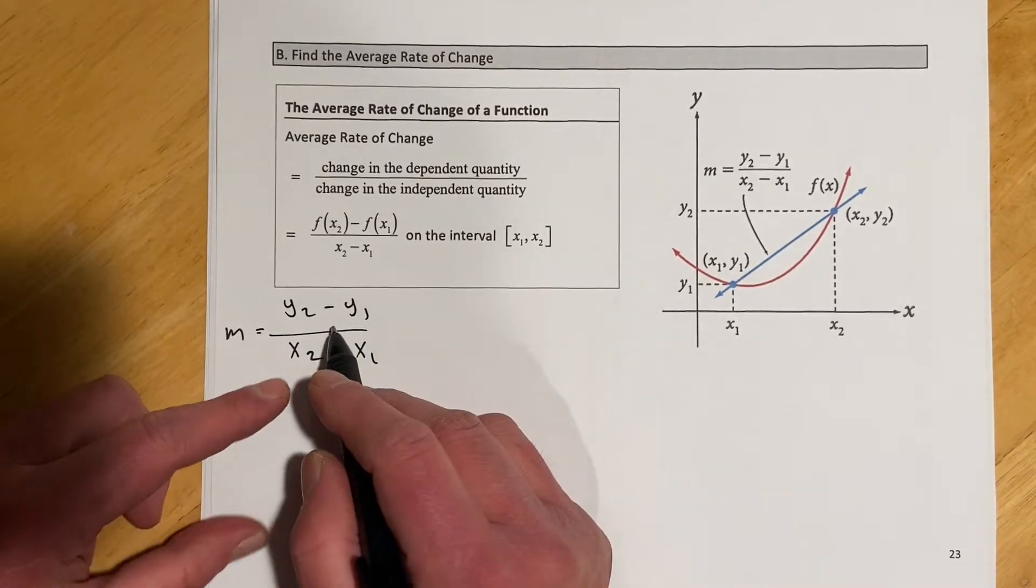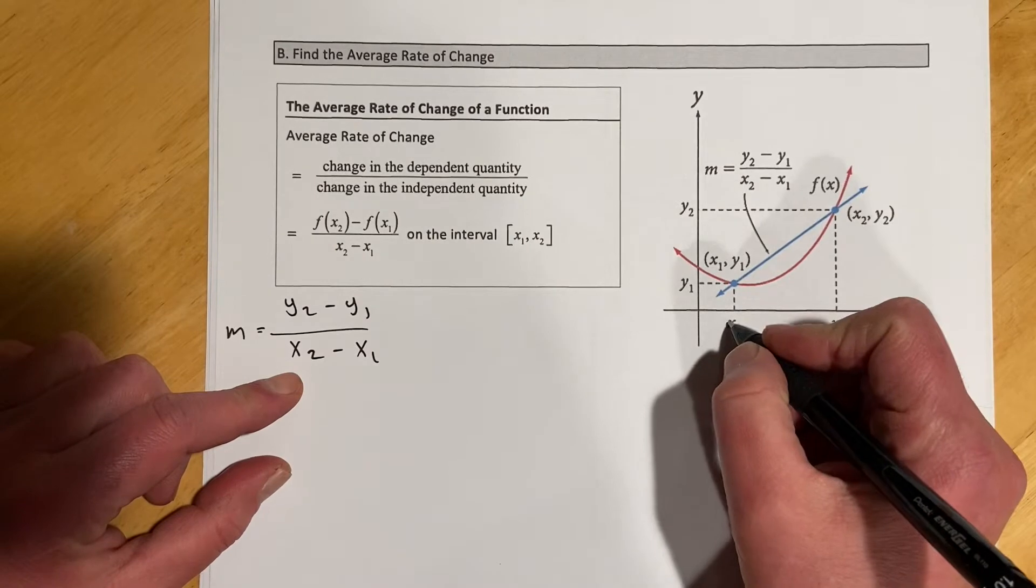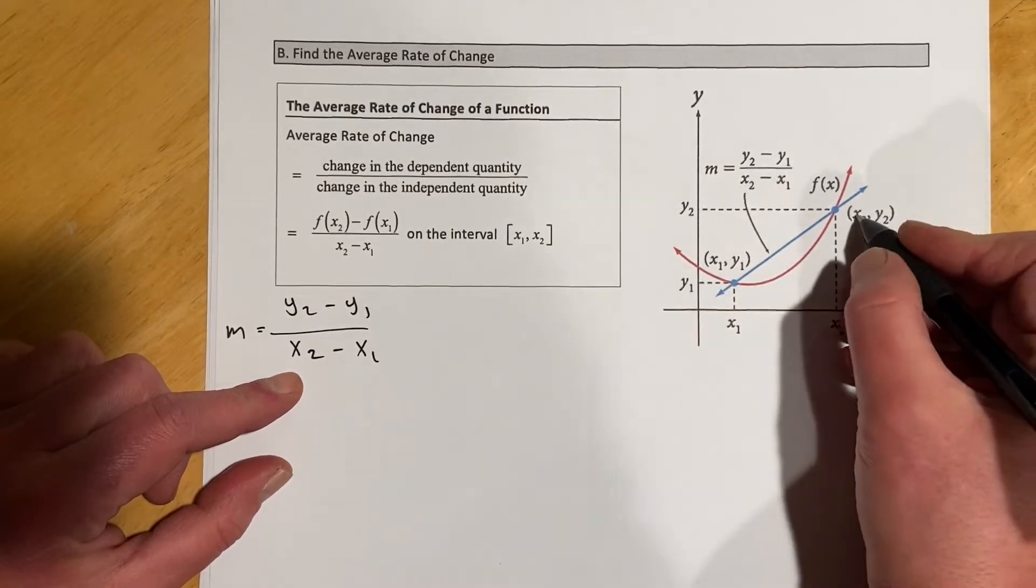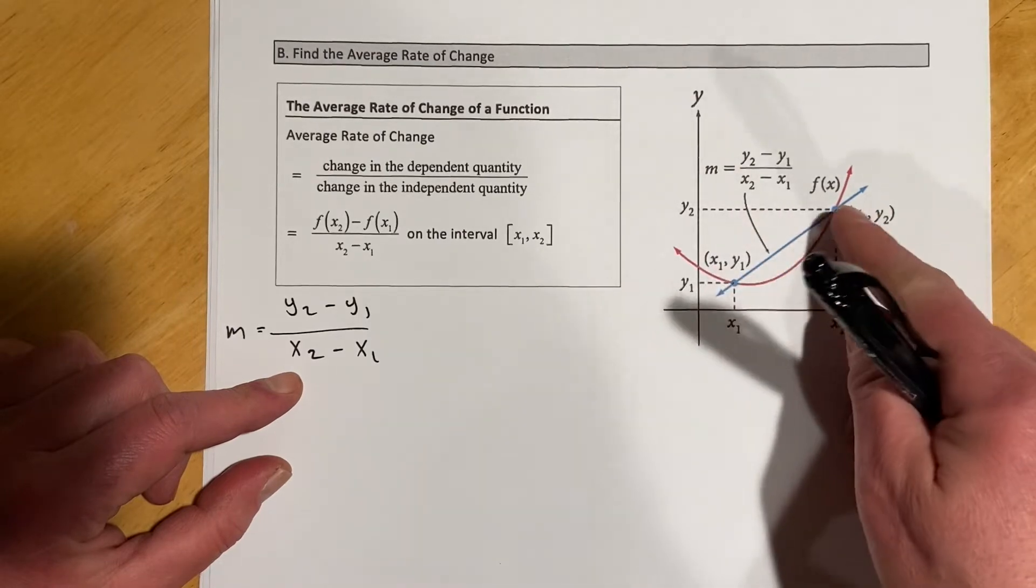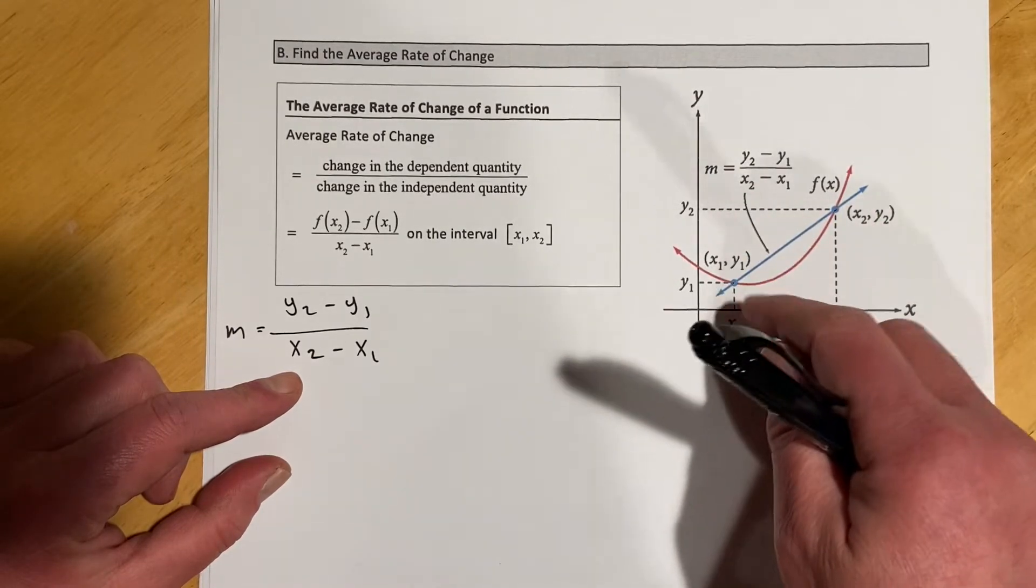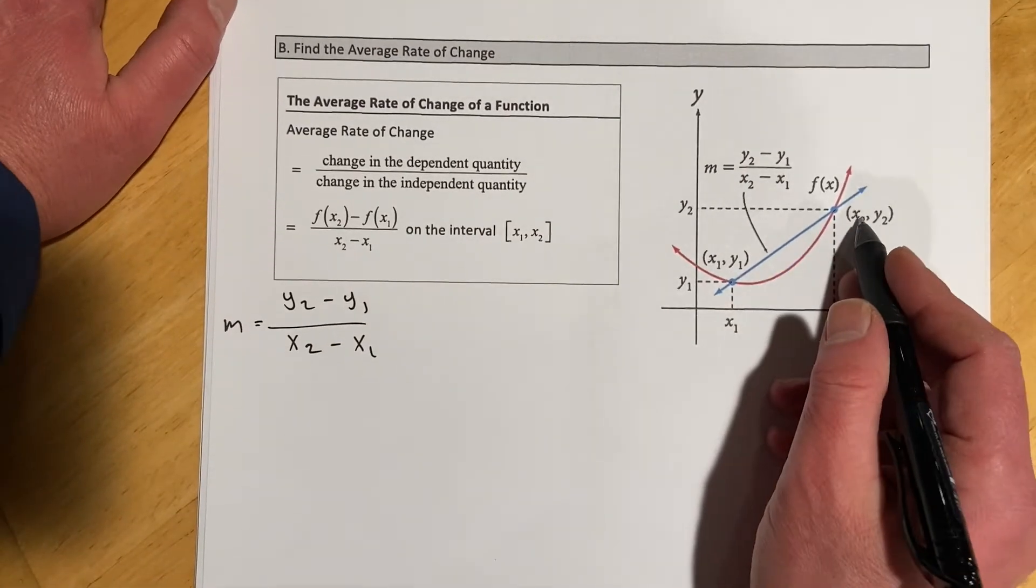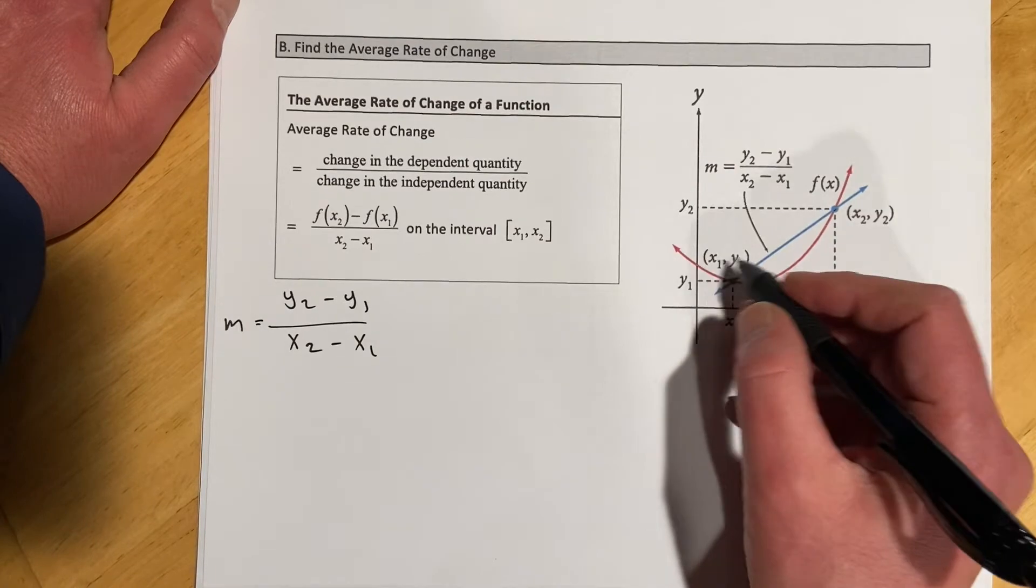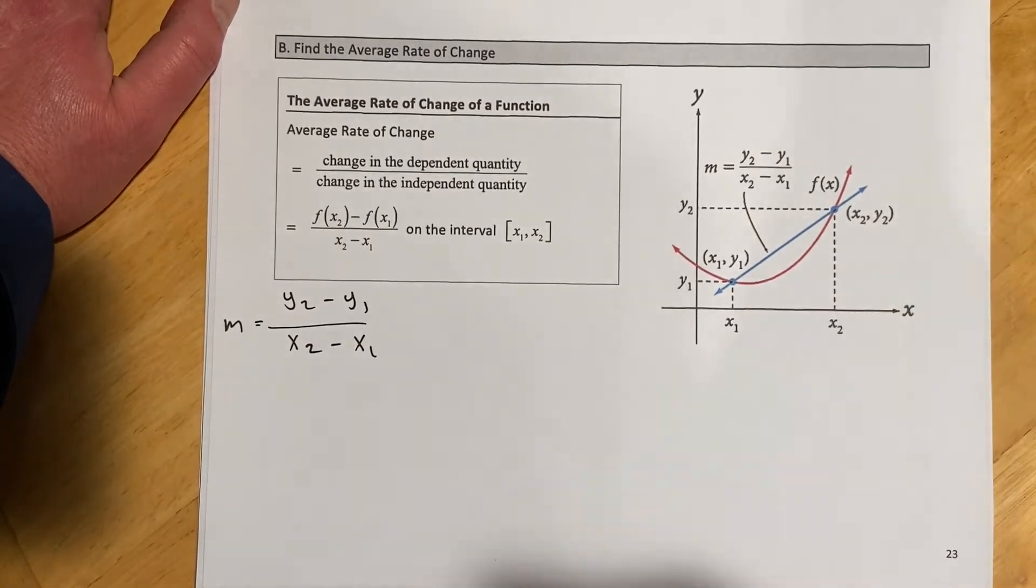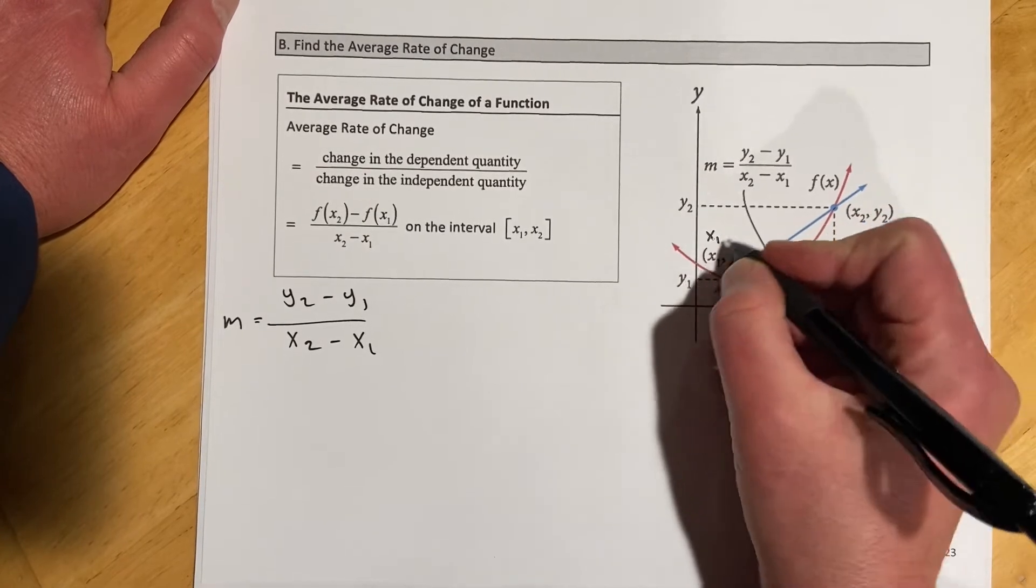To tie that in with what we did in the last section with slope, if I have this point x1, y1 and x2, y2, these two points right here, I can do my change in y and my change in x and then that gets me slope of a line. If I write these in function notation instead of x1, y1, x2, y2, it would look like this.